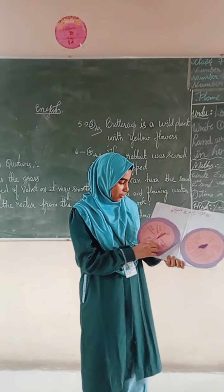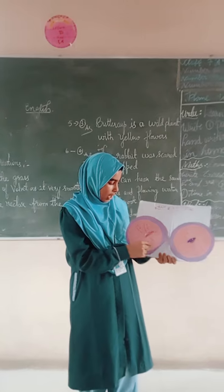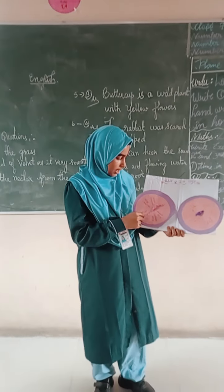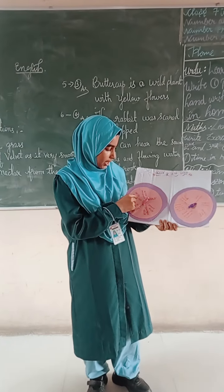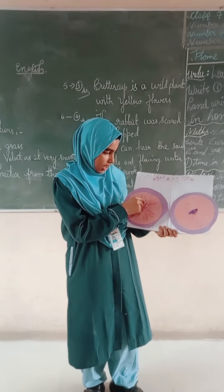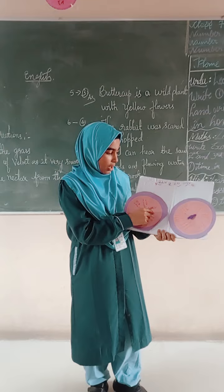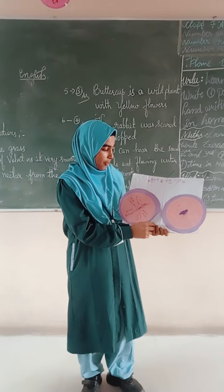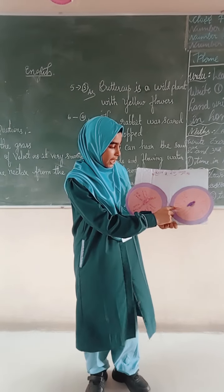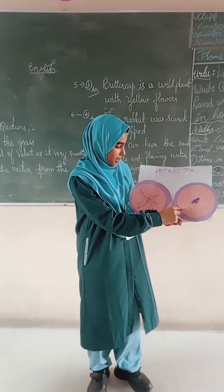There are 6 types of noun: noun, proper noun, common noun, collective noun, abstract noun, and material noun. Now, what is meant by noun? Noun is a name of a person, place, animal, or thing.